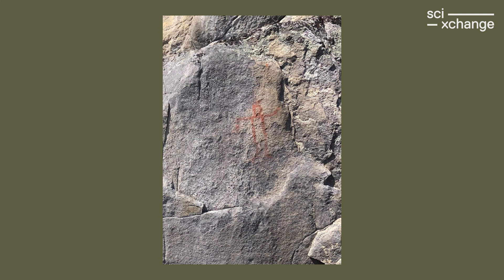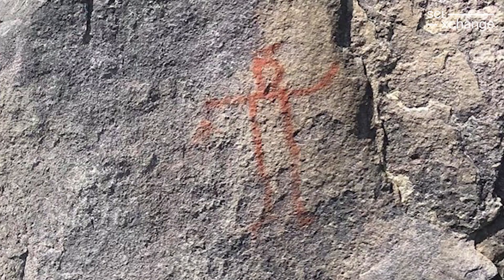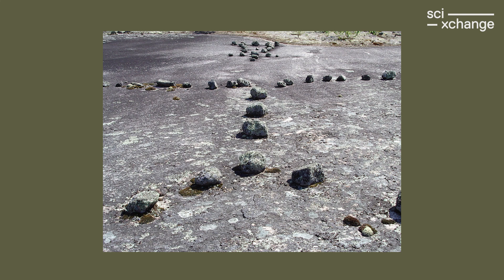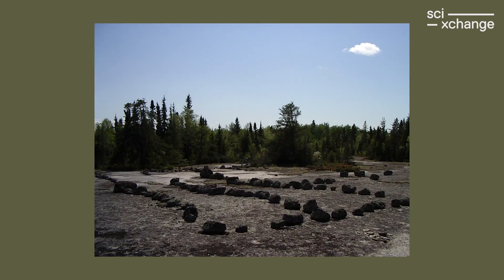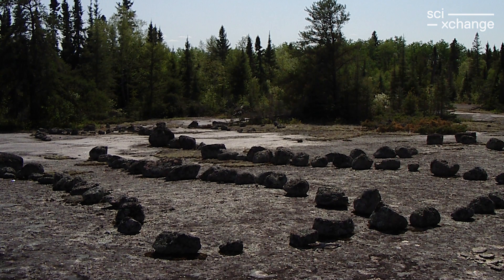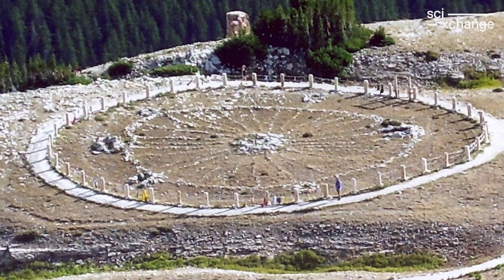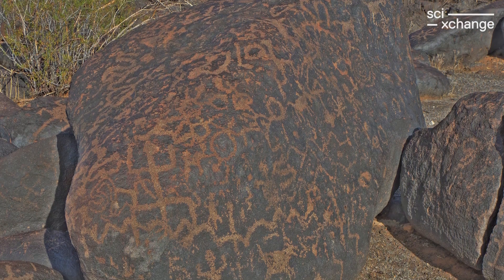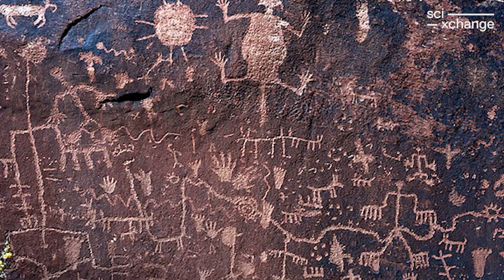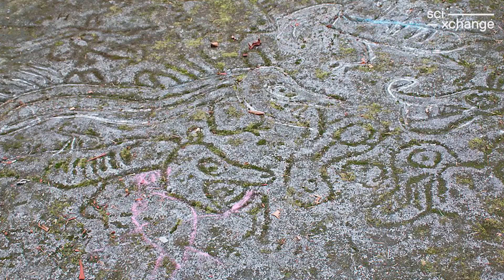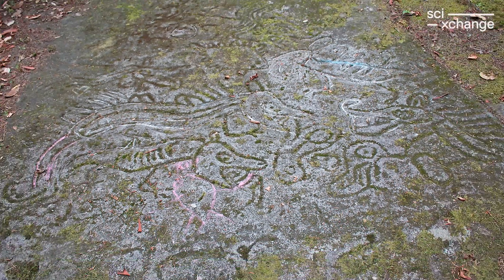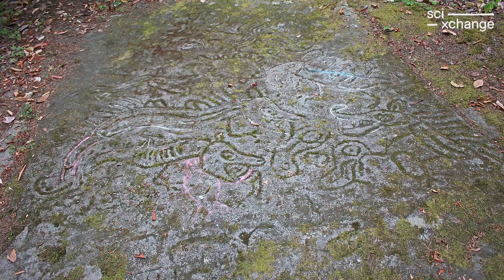Pictographs are when you paint on a rock or a rock face. Petroforms are when you take rocks and pile them up to indicate a shape, and Indigenous people did this right across Turtle Island. Some of the most fascinating ones are when they would make what we call the medicine wheel out of rocks. And petroglyphs are when we actually carve into the rock — we have wonderful examples of these right across North America.